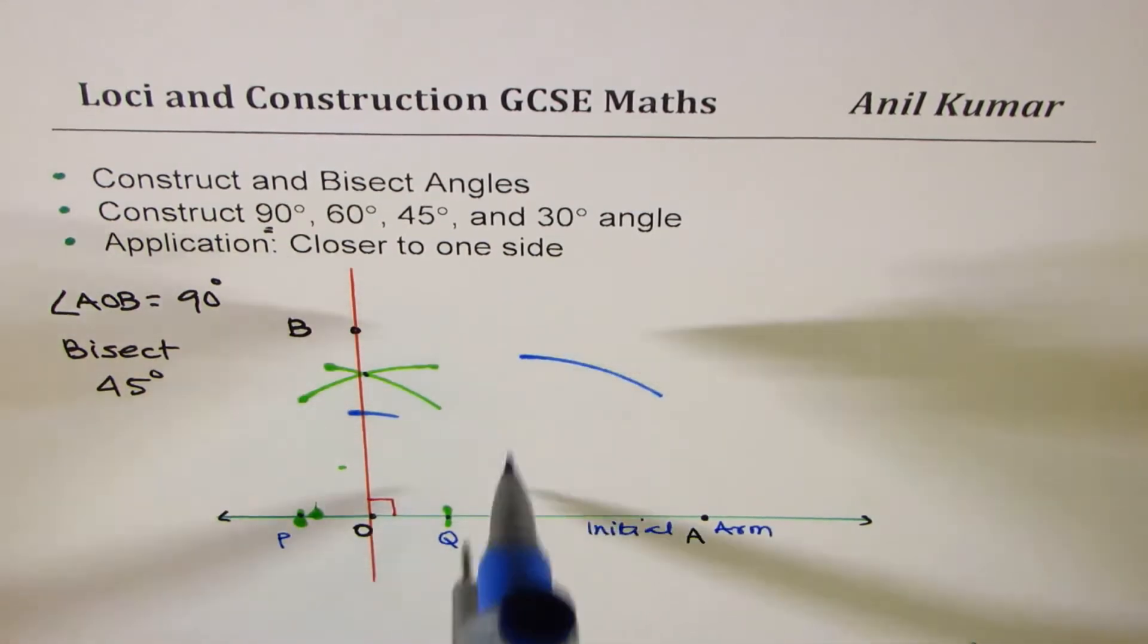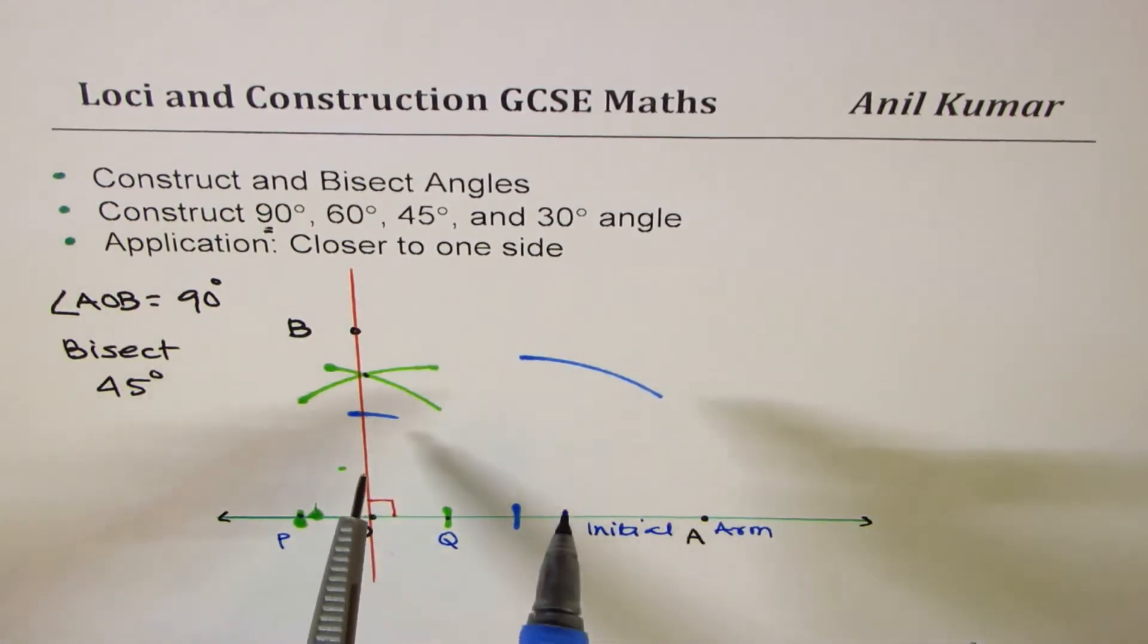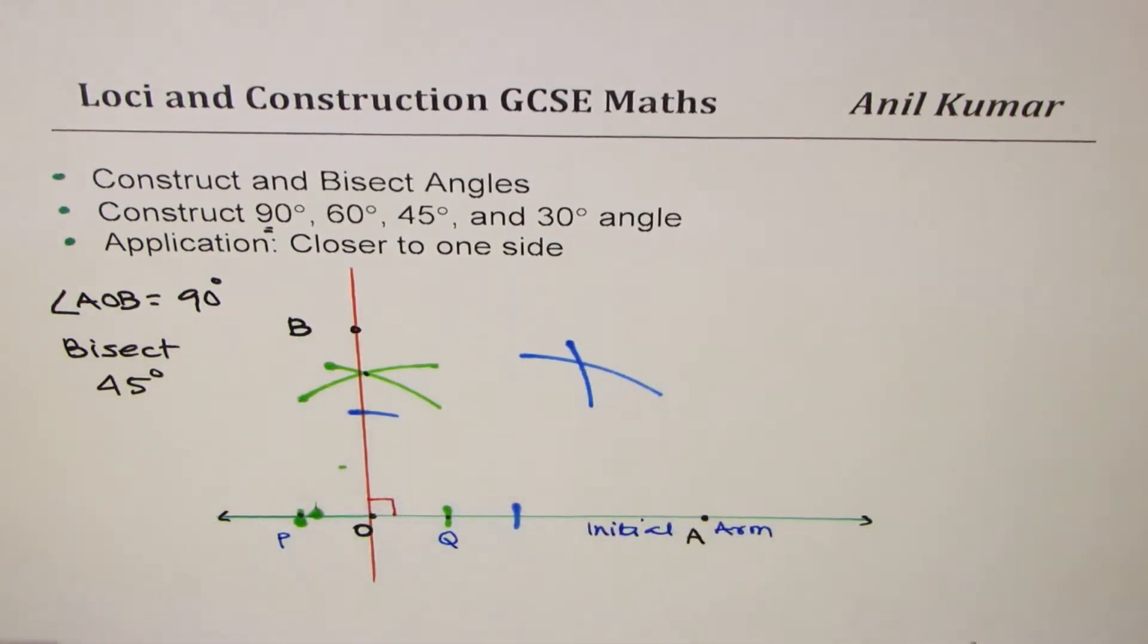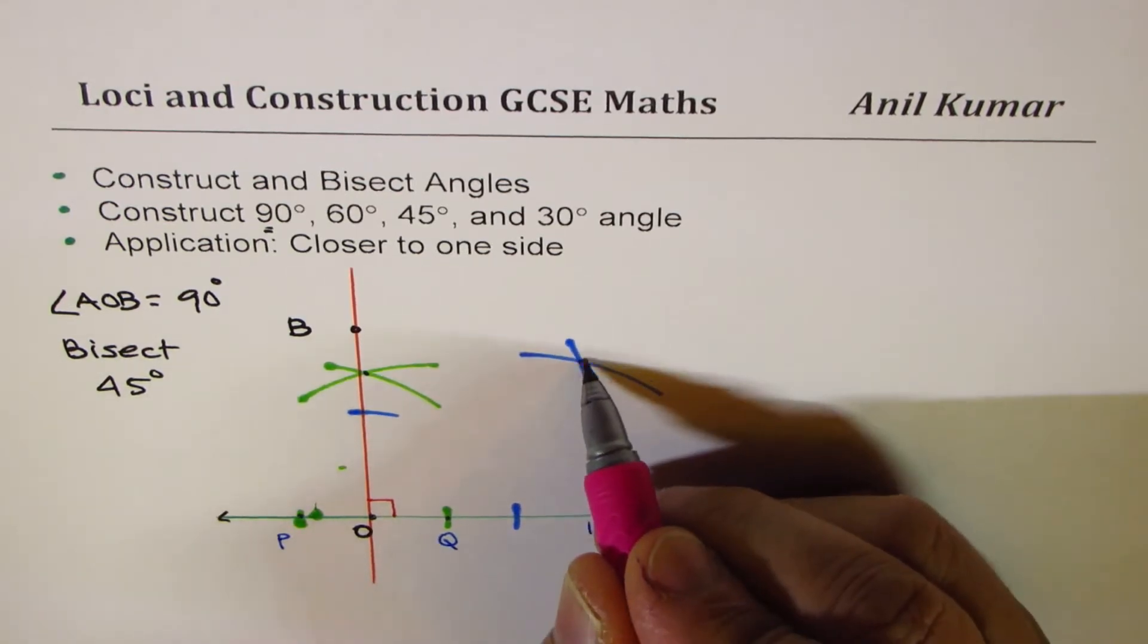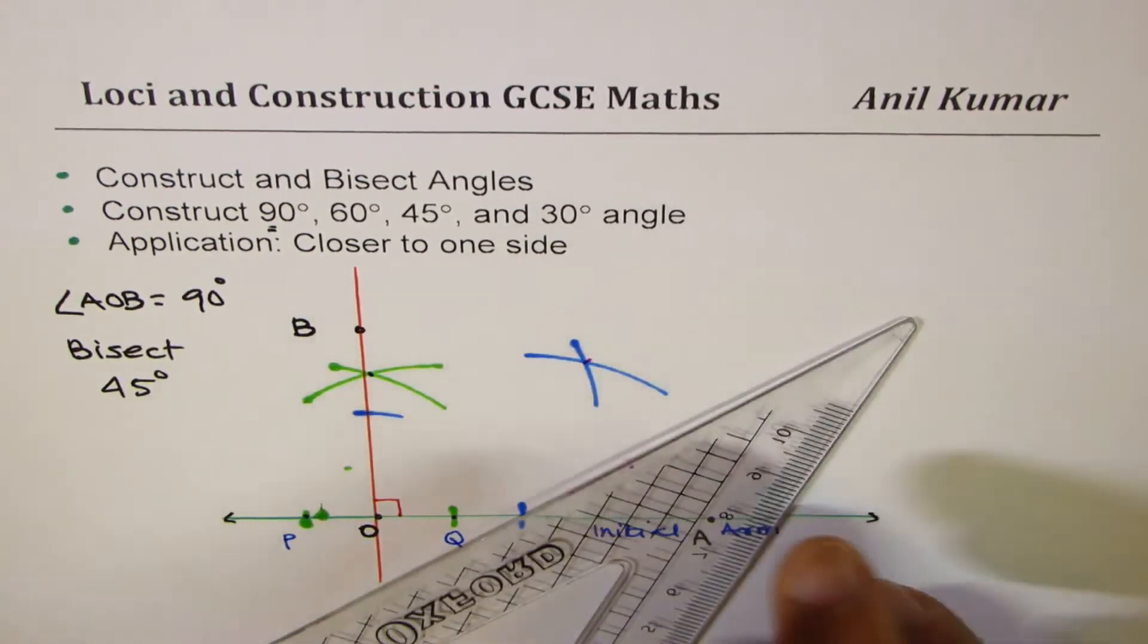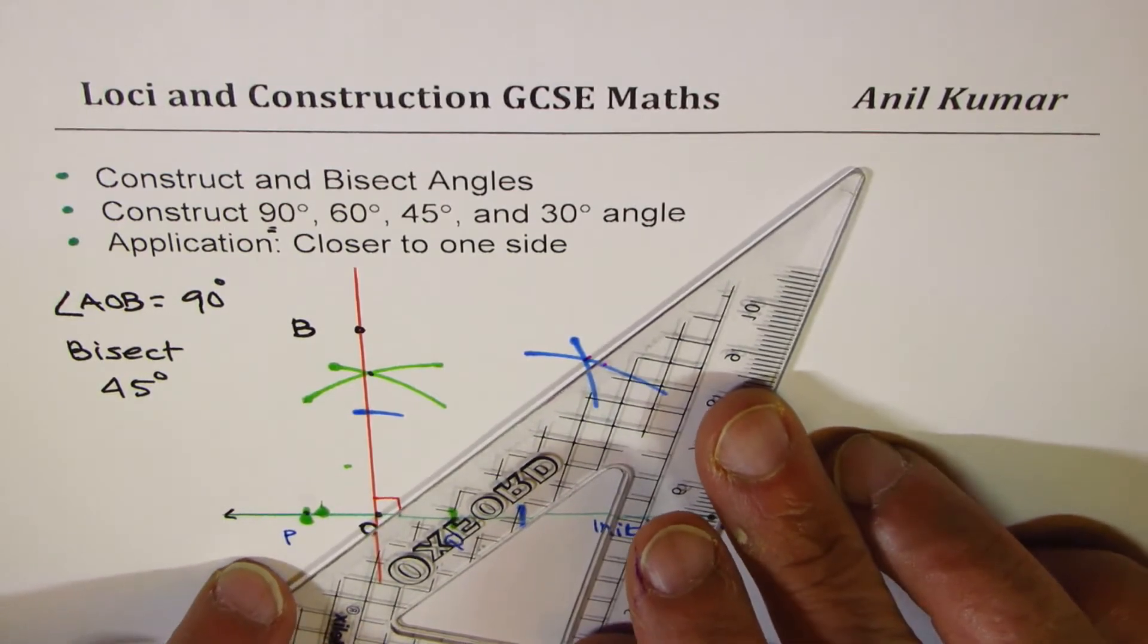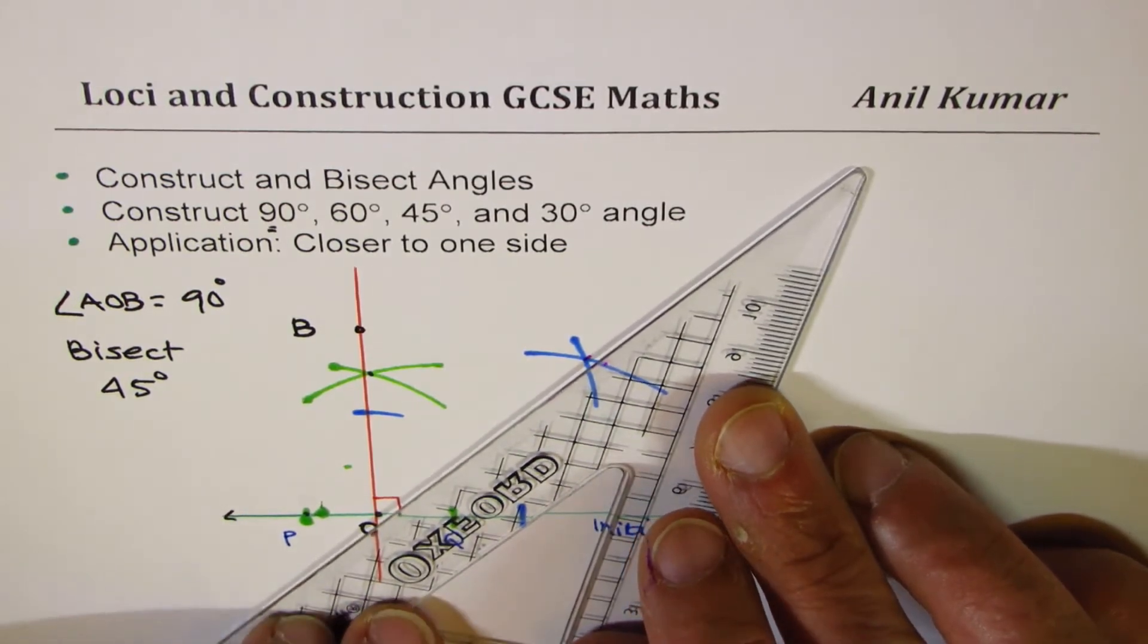And then mark somewhere in between, two arcs, one from each, as shown here. Join that point. So this is the point now from O. If you join this point, then what you get is an angle of 45 degrees.